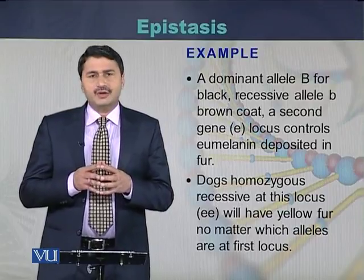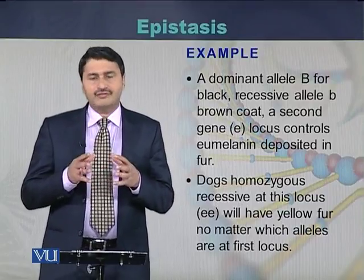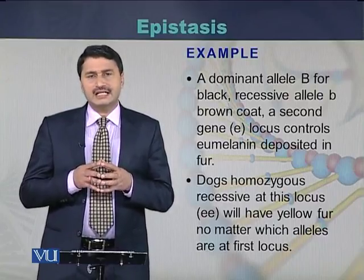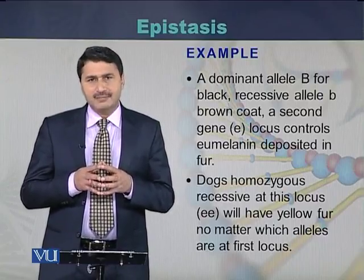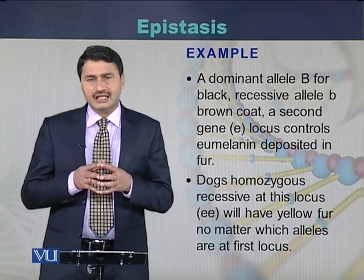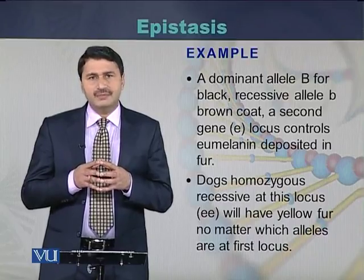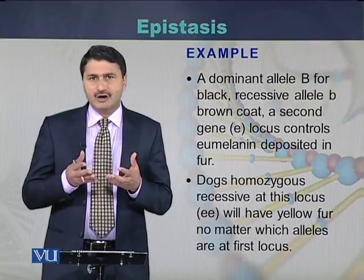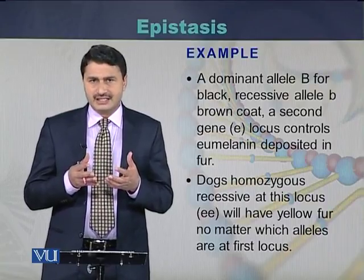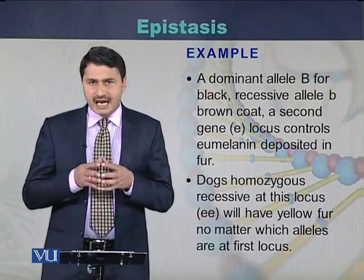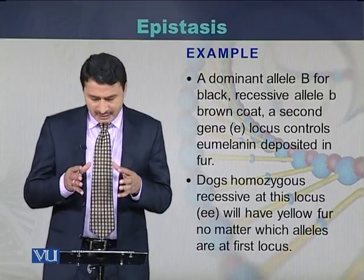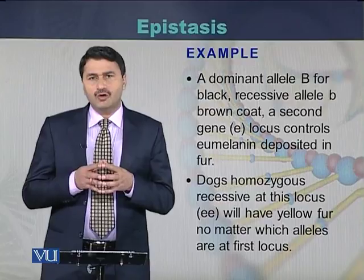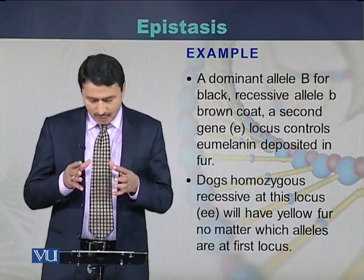In the fur of these dogs, there is a dominant allele represented by B. If this allele is present, the fur color will be black, while if the alternative recessive allele of this gene is present, then the color of the coat of the dogs will be brown.